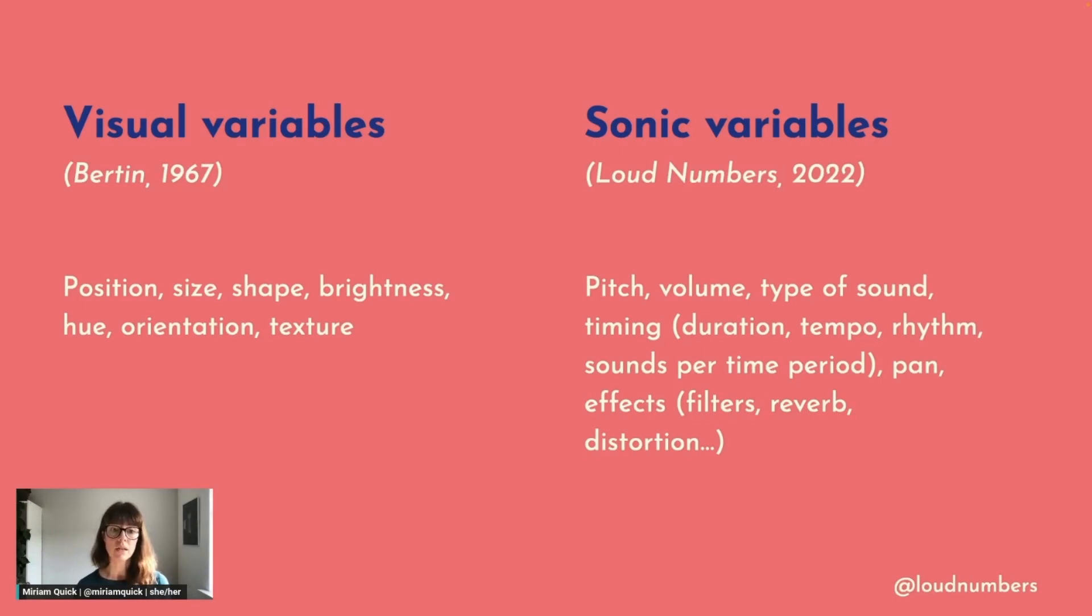In a similar way, Duncan and I have created a list of some of the parameters of sound that can be mapped to data, and we've called these sonic variables. They can include things like pitch, volume, type of sound, meaning the instrument or the timbre used, various aspects of timing, which incorporates sound duration, tempo, the rhythm, the number of sounds per time period and much more.